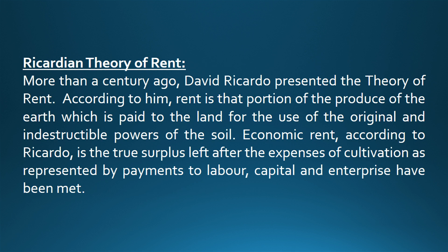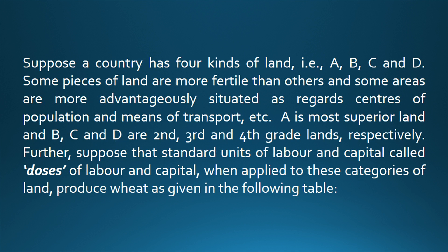Ricardian Theory of Rent. More than a century ago, David Ricardo presented the theory of rent. According to him, rent is that portion of the produce of the earth which is paid to the land for the use of the original and indestructible powers of the soil. Economic rent, according to Ricardo, is the true surplus left after the expenses of cultivation as represented by payment to labour, capital and enterprise have been met. Suppose a country has four kinds of land — A, B, C and D. Some pieces of land are more fertile than others and some areas are more advantageously situated as regards centres of population and means of transport, etc.